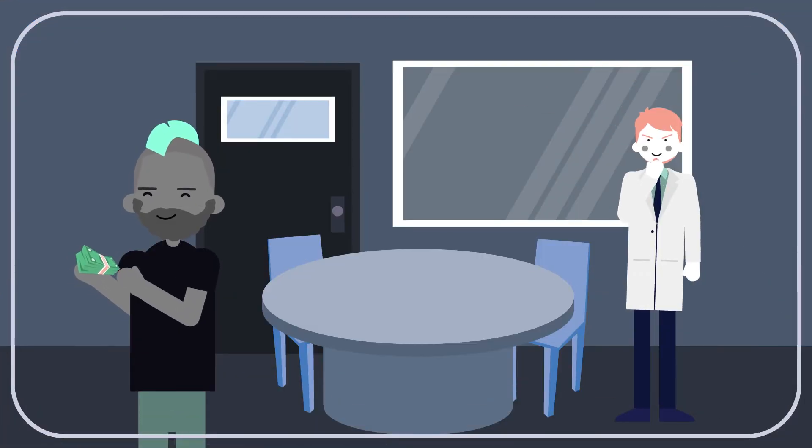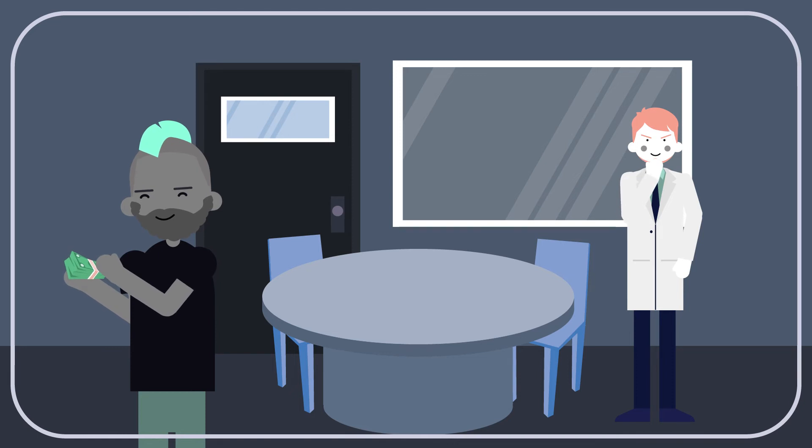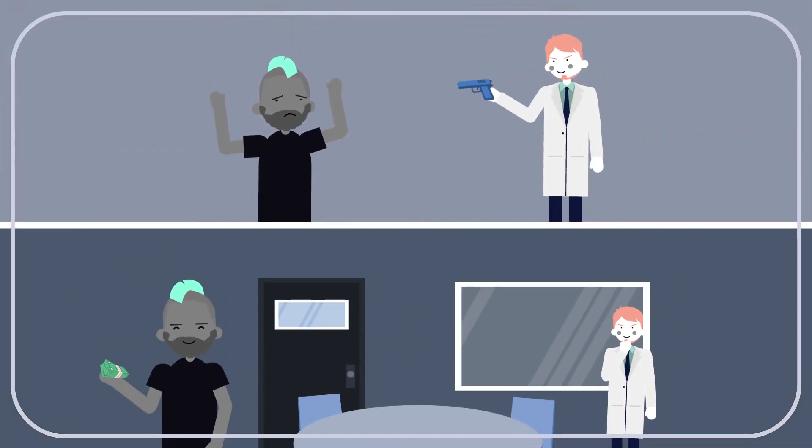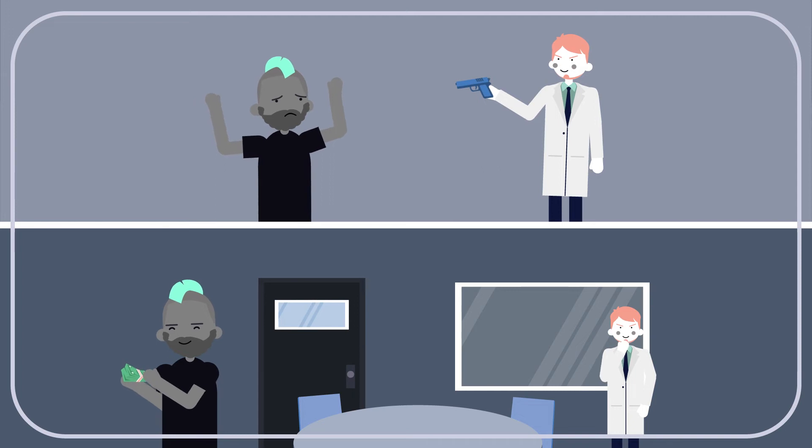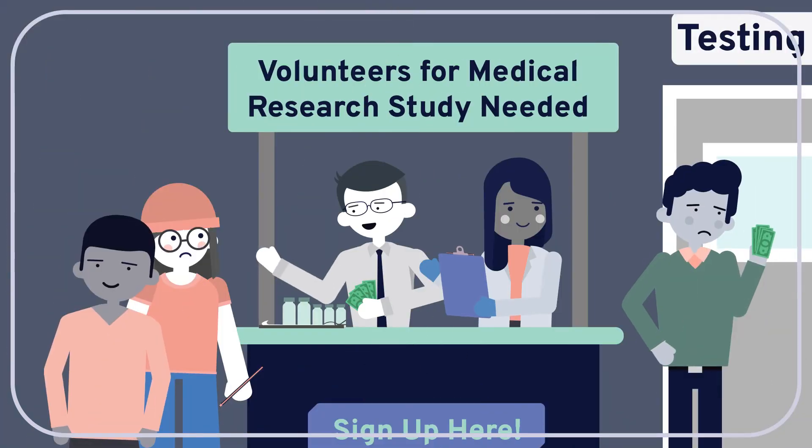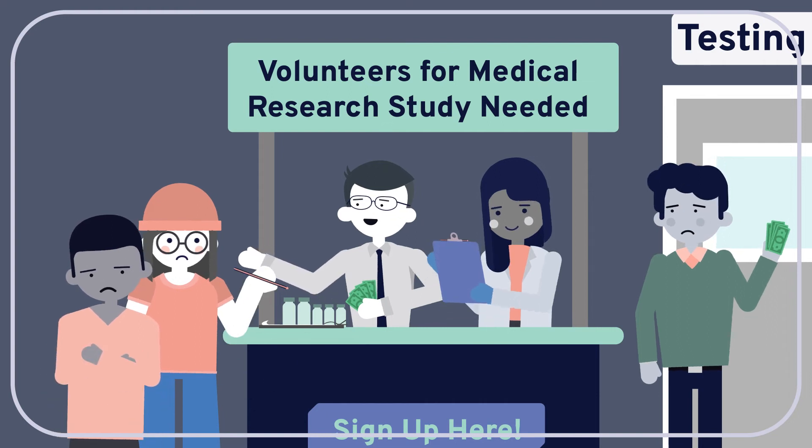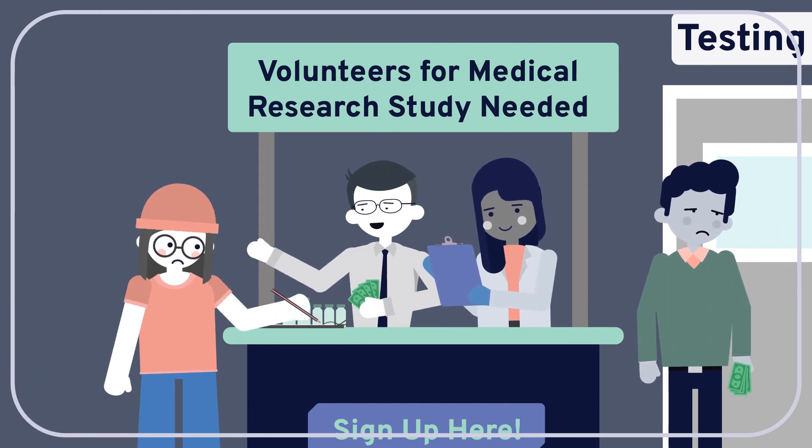Making it harder for you to say no to participation could be a way for researchers to take advantage of you. Sure, paying you isn't the same level of coercion as forcing you at gunpoint, but if the payment offer is especially attractive, it would work to distract you from soberly considering the risks of participation. Intentionally or not, the researchers could end up pushing you to make the decision they want, rather than a decision you're comfortable with.